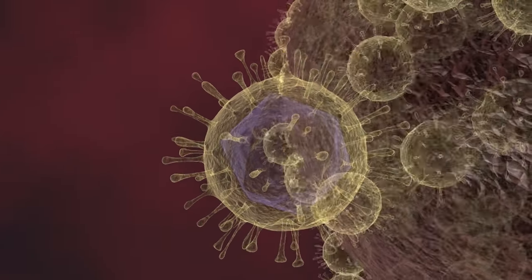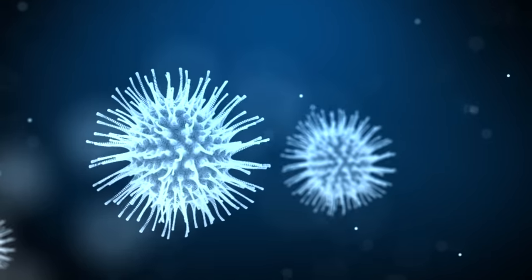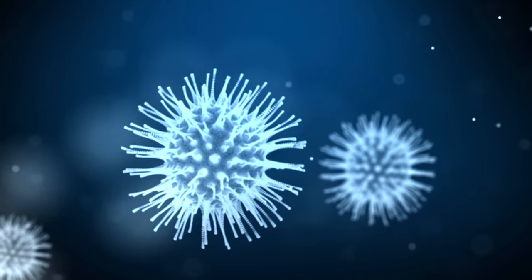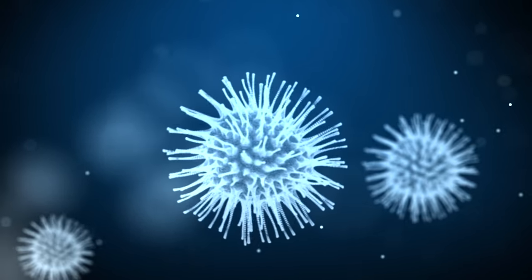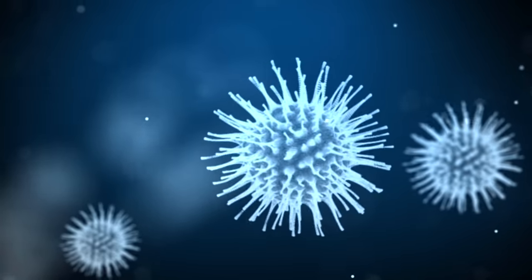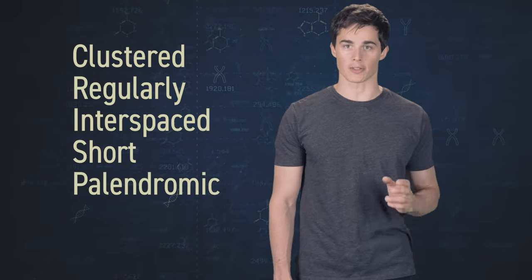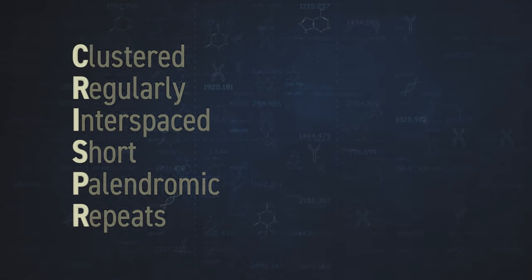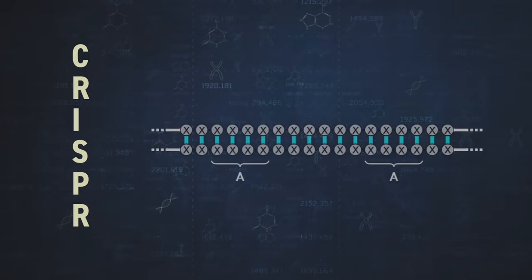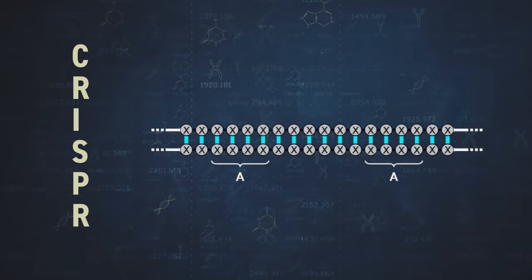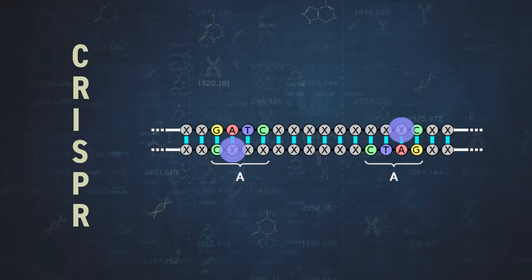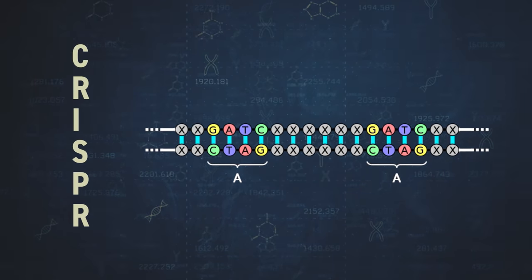But some bacteria have figured out a way to protect themselves from viruses. When these bacteria are exposed to the DNA of a virus, they keep the foreign piece of DNA for future reference. A copy of this foreign DNA is stored in clustered, regularly interspaced short palindromic repeats, or CRISPR. These are basically sequences of DNA bases which are mirrored and repeated, so that they can be easily differentiated from the rest of the cell's genome.